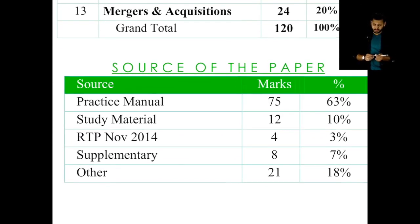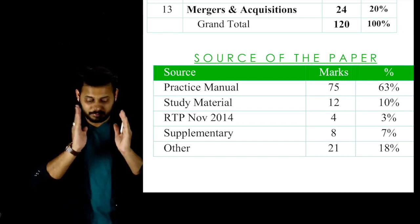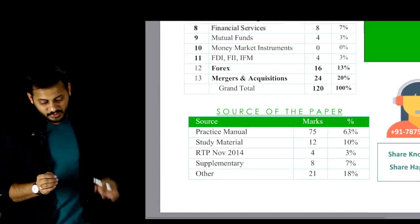Talking about the source of the paper, Practice Manual 75% of the paper was from the practice manual. Study material 12%. Sorry, there is 75 marks and the percentage is 63% only out of 120.